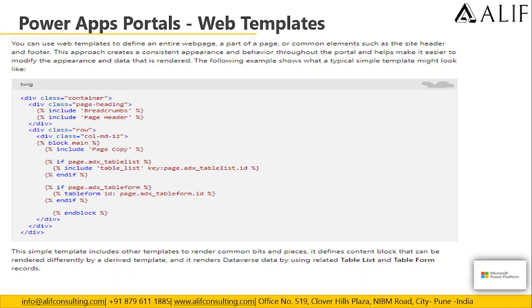The following example shows what a typical simple template might look like. This simple template includes other templates to render common bits and pieces, and it defines a content block that can be rendered differently by a derived template.